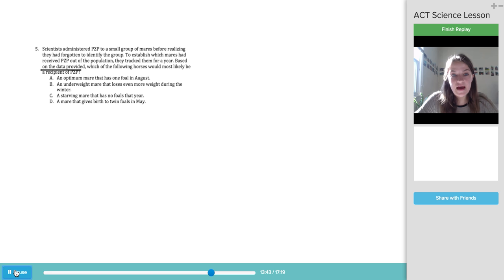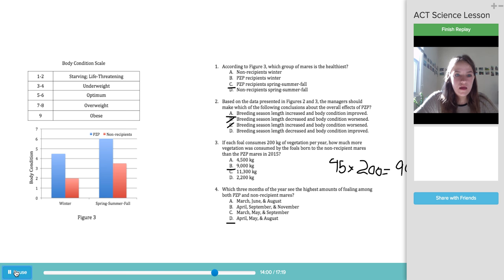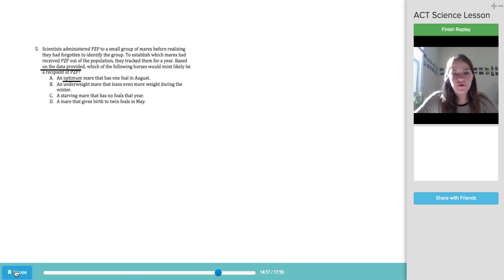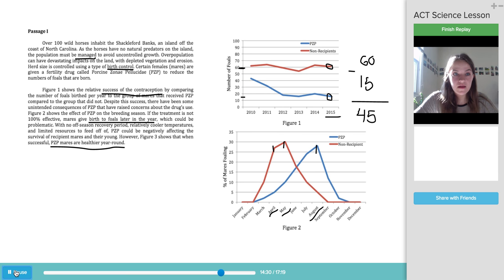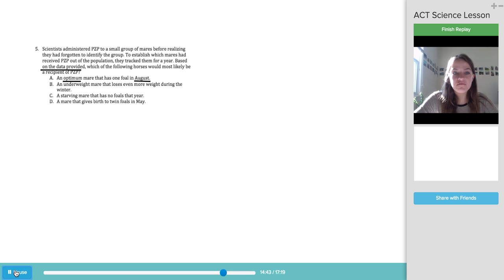So A, an optimum mare that has one foal in August. So this is combining both body condition and the number of foals it gives birth to and the time of year. So an optimum mare, that sounds about right. We saw in figure three, let me go back to figure three, that the PZP horses definitely have the optimum condition rate five to six, which you do not see in the non-recipients, which range from two to 3.5, which is the underweight starving condition. So it has one foal in August. One foal, we want PZP to work and not have foals, but the fact that it has in August is definitely signifies a horse that would have PZP. Again, if we go back to figure two, you can see that only the PZP horses really have any foals in August. So that sounds good. So A for part five could be a good answer.